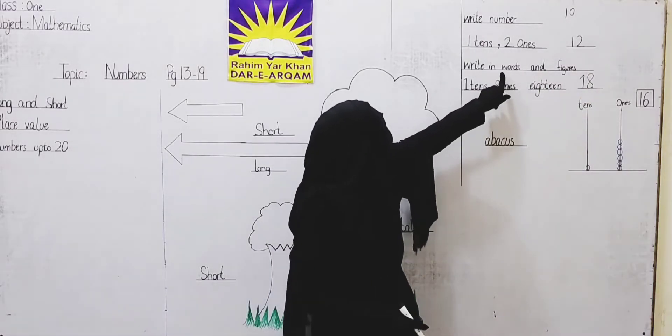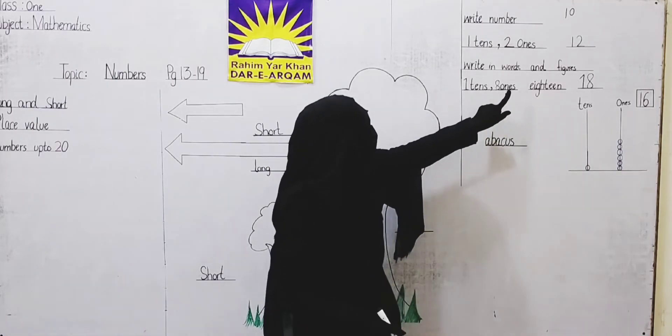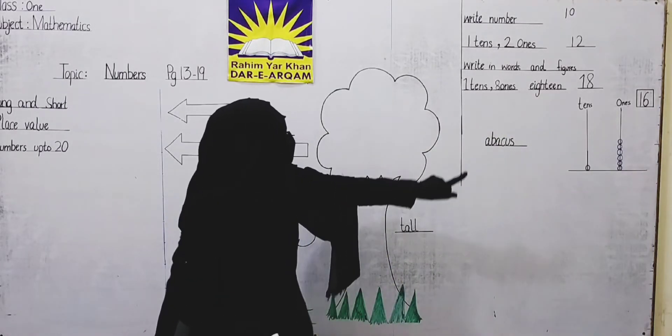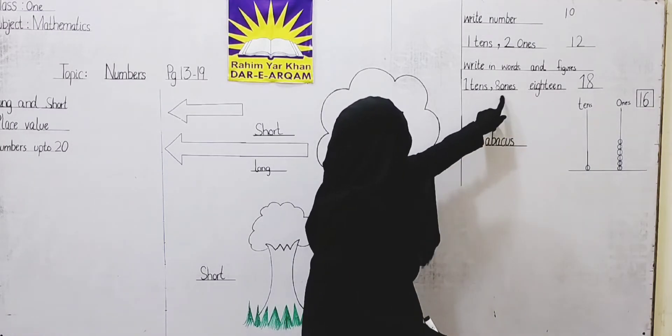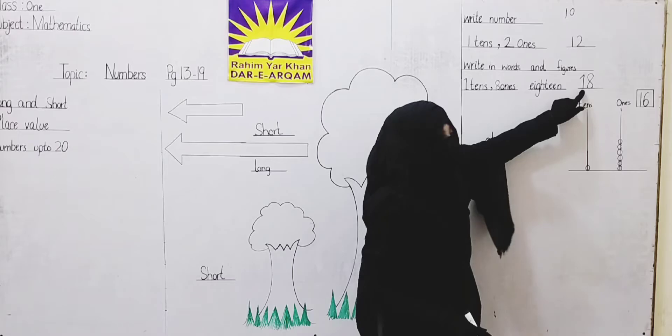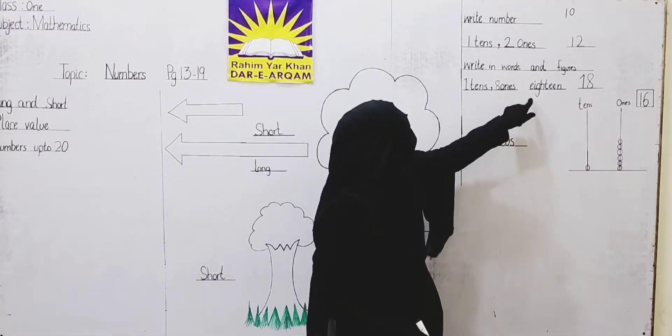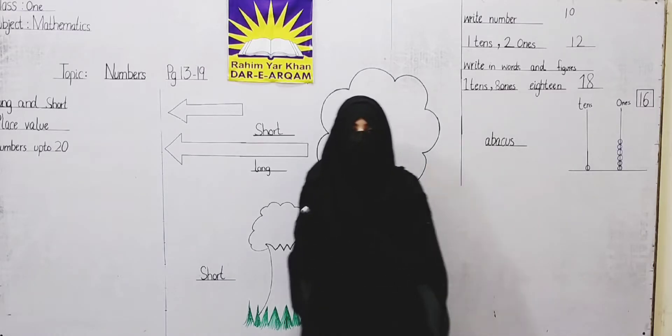Now, we can see words and figures. One tens and eight ones. Words from tens. One tens and eight ones. We can see one tens. Then, we can write it.